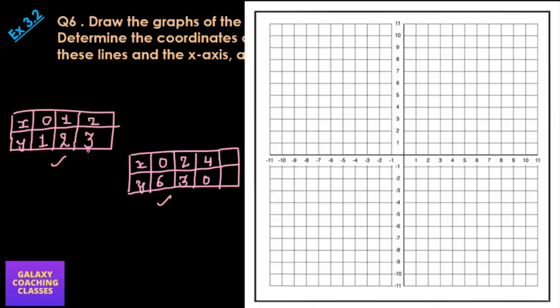So now guys, we are going to represent these coordinates on our graph and form a triangle and we will shade it and we are going to find out the area also. So 0 comma 1, so 0 comma 1 will come here. 1 comma 2, 1 and 2 will come here. Then 2 comma 3, 2 and 3 will come here. So you can draw a line like this guys. You will get a straight line like this.